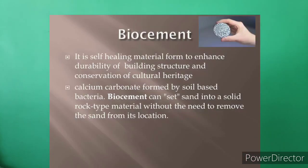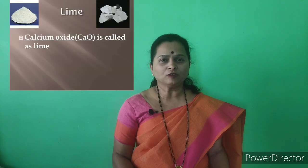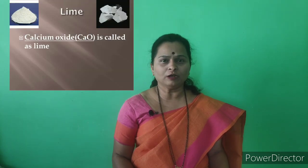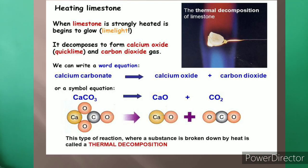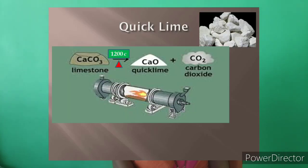Bio cement is a self-healing material used to enhance the durability of building structures and conservation of cultural heritage. Lime (calcium oxide) is obtained from calcium carbonate; when calcium carbonate is heated it converts to calcium oxide (lime) with evolution of carbon dioxide gas.